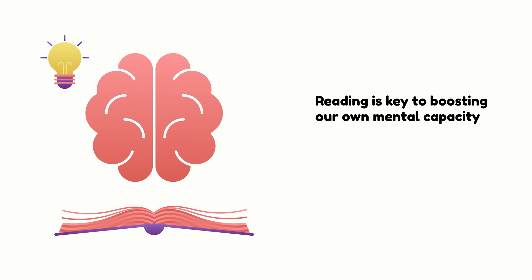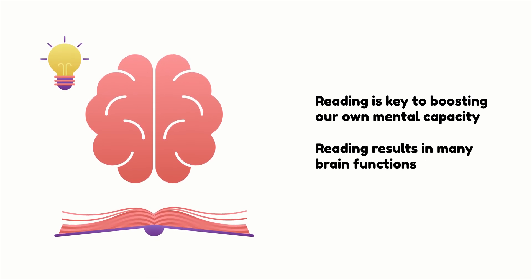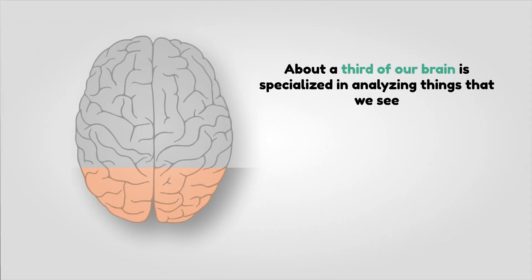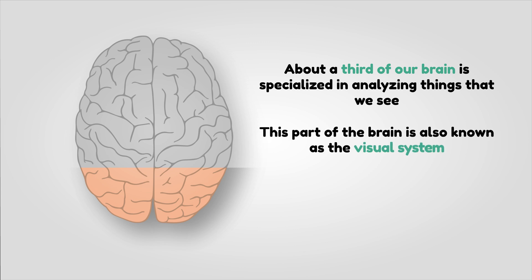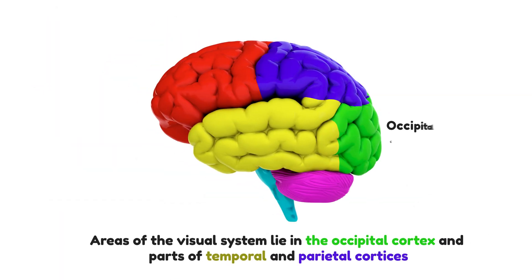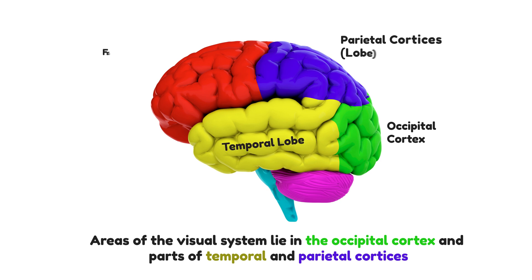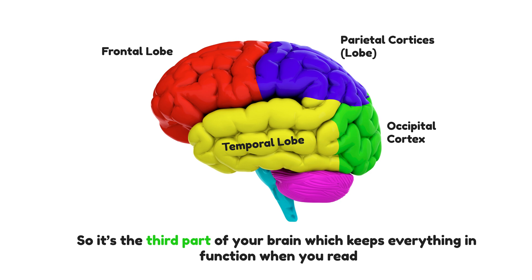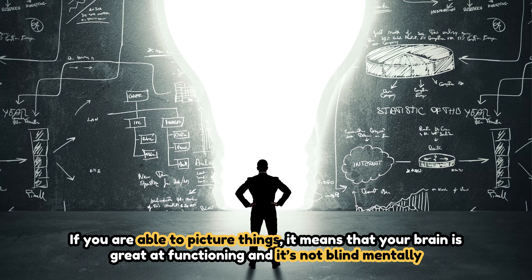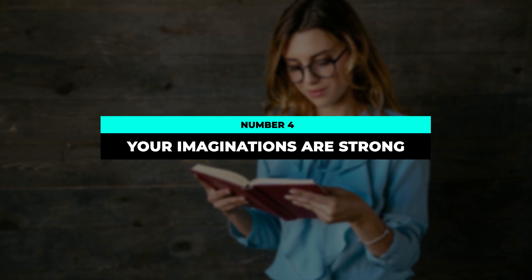Research has shown that reading is key to boosting our mental capacity, resulting in many brain functions including visualization, auditory functions, and comprehension. About a third of our brain is specialized in analyzing things that we see — this part is known as the visual system, based in the cortex. Areas of the visual system lie in the occipital cortex and parts of the temporal and parietal cortices. If you're able to picture things while reading, it means your brain is functioning well and is not mentally blind.